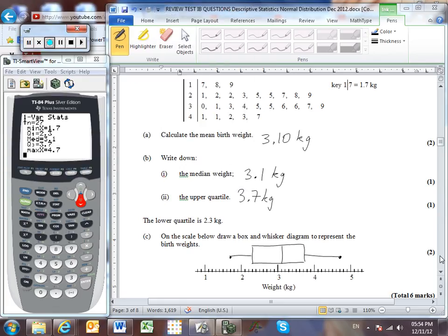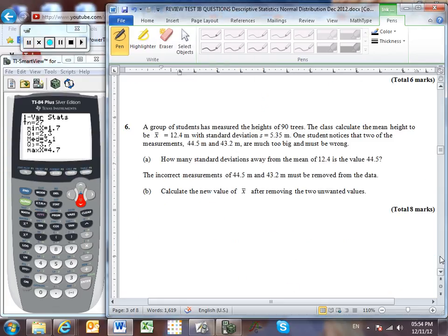Okay, we're going to move on then to question number six. We've got a group of students that measured the heights of 90 trees, and the mean of those heights is 12.4. So let's really think about what we've learned here. Remember that mean, by definition, is the sum of all of the values divided by the number of values.